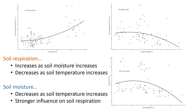High soil temperatures should also have this effect, yet it does not in this study. Rather, a negative correlation is observed where soil respiration decreases with increasing soil temperature. This finding is best explained by the relationship found between soil temperature and soil moisture, which was also negative, showing that soil moisture is limited at higher temperatures and is thus exerting a stronger influence on soil respiration.